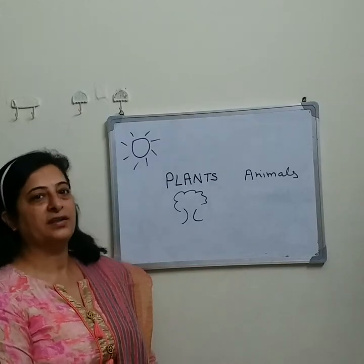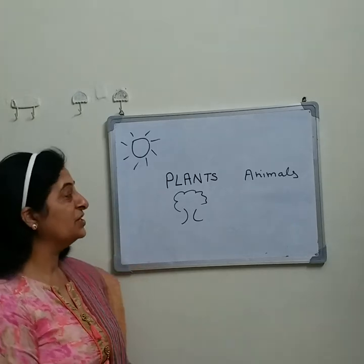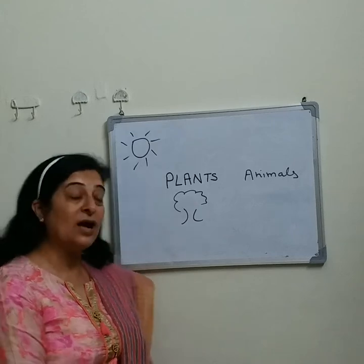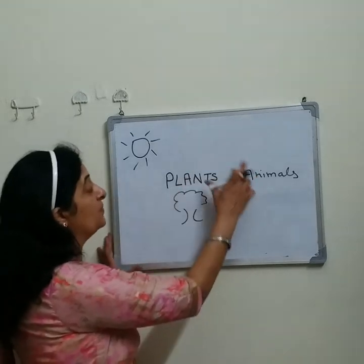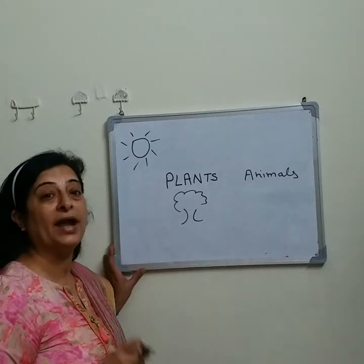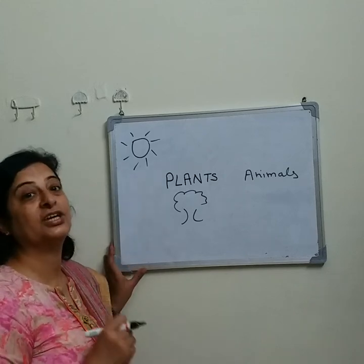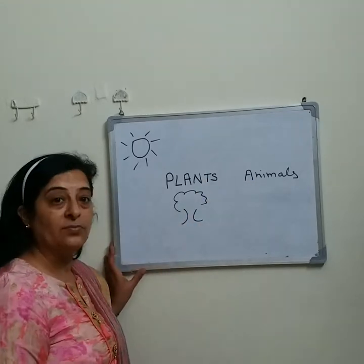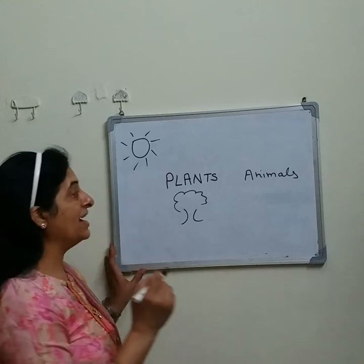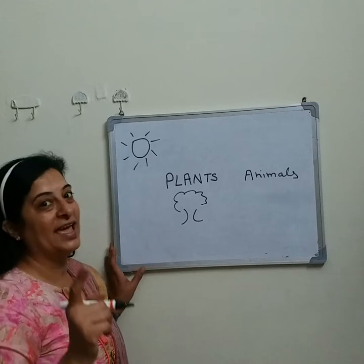Good morning everyone. Today we will discuss about give and take between plants and animals. Plants and animals depend on each other. Plants depend on animals for the carbon dioxide gas, and animals depend on plants for their food and oxygen.